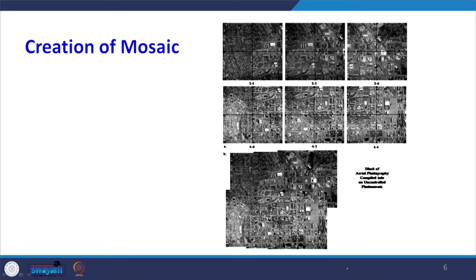Normally we do not deal with a single photograph — we deal with a large number of images or photographs together. We have to create a mosaic when dealing with a large number of images, because our study area may not be covered by a single image. As you can see here, 6 images are used to cover the area, and the bottom one is the mosaic created from those 6 images. Prior to visual interpretation we create this mosaic and carry out interpretation on it.